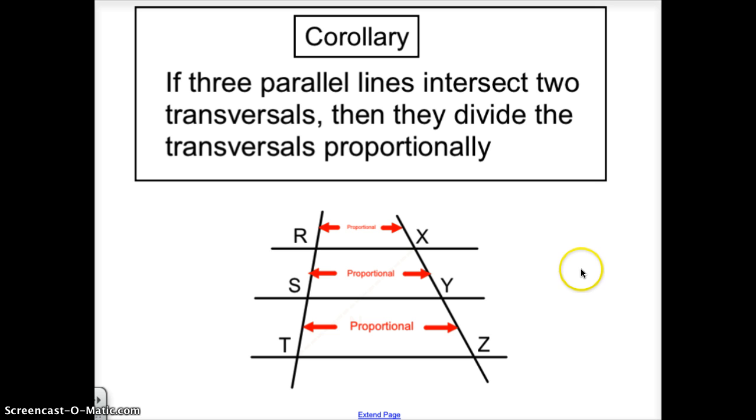The corollary of that says if three parallel lines intersect two transversals, then they divide the transversals proportionally. This is very similar to the one where we said if the congruent sides RS and ST were congruent, then the three parallel lines would also congruently divide up any other transversal that would hit those three parallel lines.